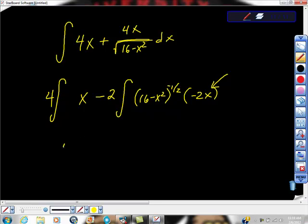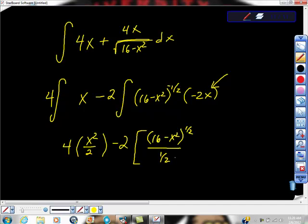So we'd get 4 times x²/2 minus 2 times (16-x²)^(1/2) over 1/2, plus C. Hopefully you can see that.